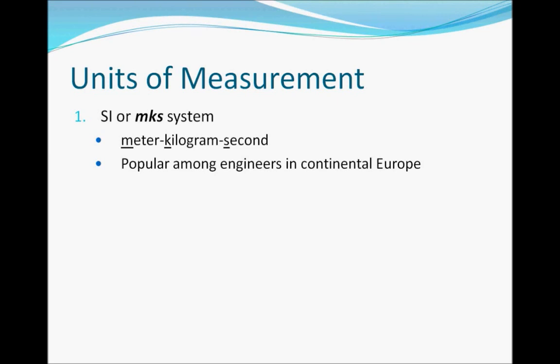Every system of measurement is based primarily on its chosen units for distance, mass, and time. The SI uses the meter for distance, the kilogram for mass, and the second for time. And every other unit in the system is actually a mathematical combination of those three units.